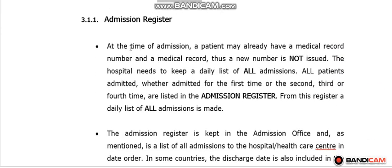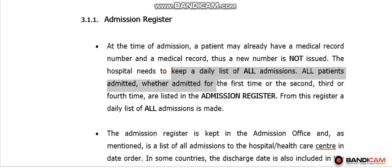There are important notes to consider. At the time of admission, a patient may already have a medical record number, so a new one is not issued. A patient's medical record number is used for life — they keep the same number as long as they return to the same hospital. The hospital also needs to keep a daily list of all admissions, called the admission list. The admission list is a list of all admissions made during one day — a daily admission list — summarizing who entered and was admitted to the hospital.